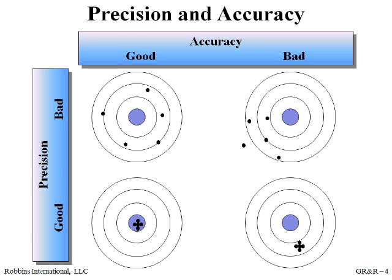This slide shows the relationship between precision and accuracy. The lower left target provides the best scenario: good precision, shown by the tight cluster, and good accuracy, shown by the marks on target. Take a moment to review the other three examples to see how precision and accuracy relate to each other.